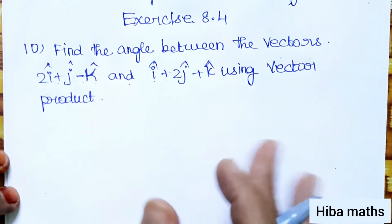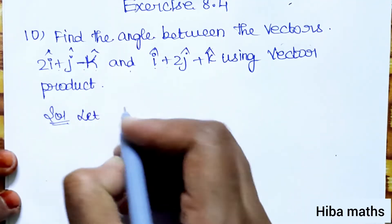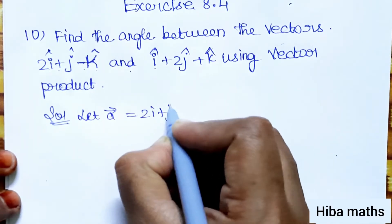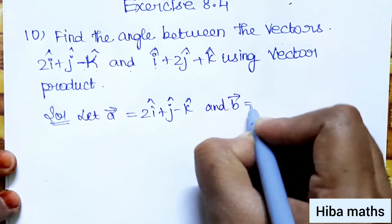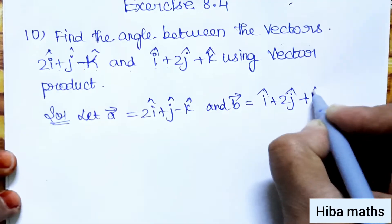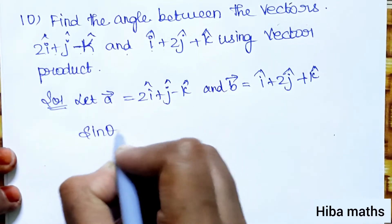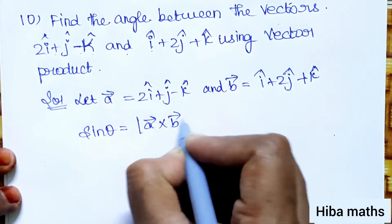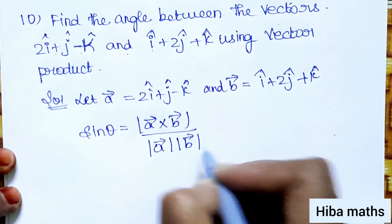To find the angle between two vectors using the vector product: a vector is equal to 2i plus j minus k, and b vector is equal to i plus 2j plus k. The formula is sin θ = modulus of a cross b divided by modulus of a into modulus of b.